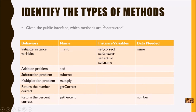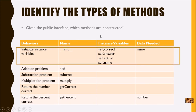Let's identify these types of methods. Given this public interface, which method is the constructor? Remember, there can only be one — it's the init method right here. It gets called automatically whenever you construct an object.